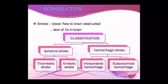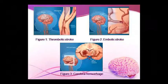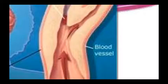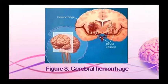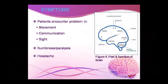There are two types of stroke: ischemic stroke and hemorrhagic stroke. Hemorrhagic stroke is further classified into intracerebral hemorrhage and subarachnoid hemorrhage. Thrombotic stroke involves a thrombus, and embolic stroke involves an embolus traveling from another place. In cerebral hemorrhage, the blood vessel is ruptured and blood leaks out. These are the three types of stroke.